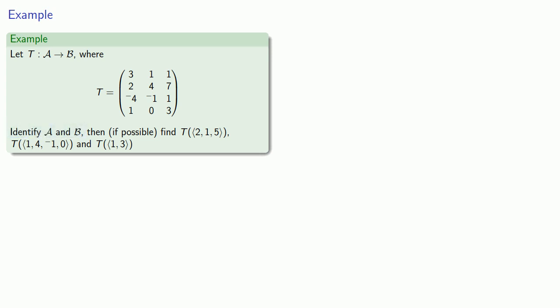Let's first of all figure out where these vectors live. Next, we want to, if it's even possible, see what our transformation does to the vector (2,1,5), to the vector (1,4,-1,0), and to the vector (1,3).